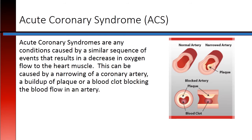Acute coronary syndromes are any conditions caused by a similar sequence of events that results in a decrease in oxygen flow to the heart muscle. This can be caused by a narrowing of a coronary artery, a buildup of plaque, or a blood clot blocking the blood flow in an artery.